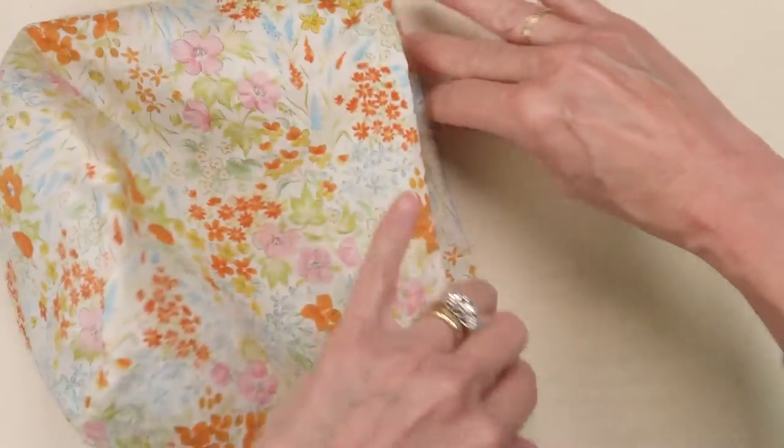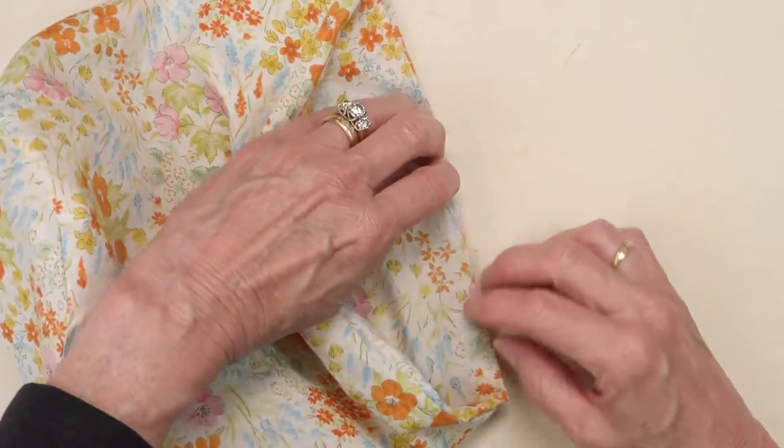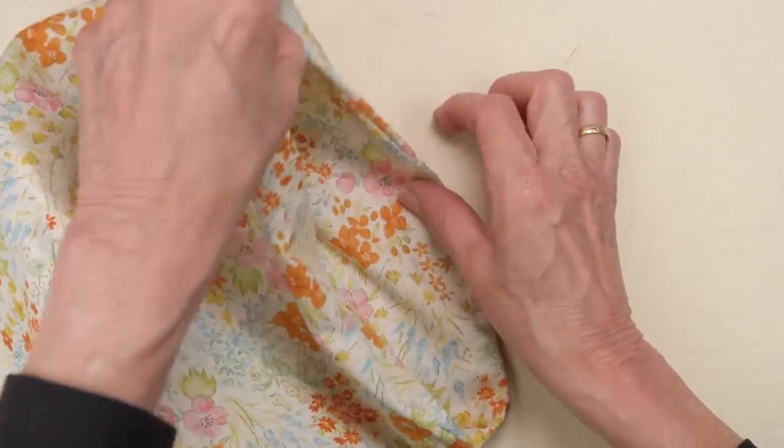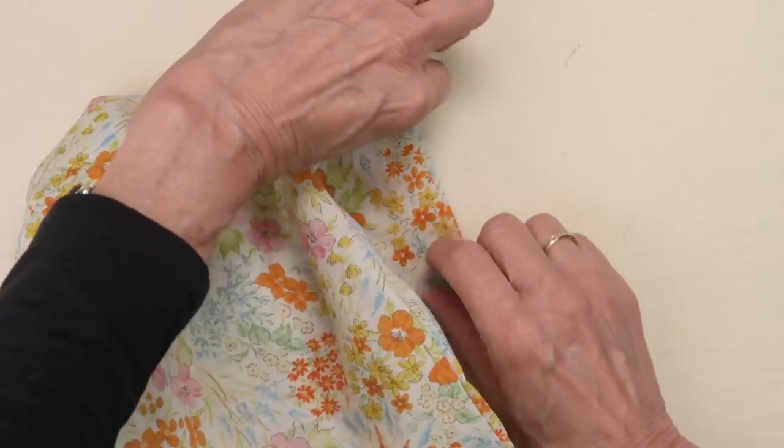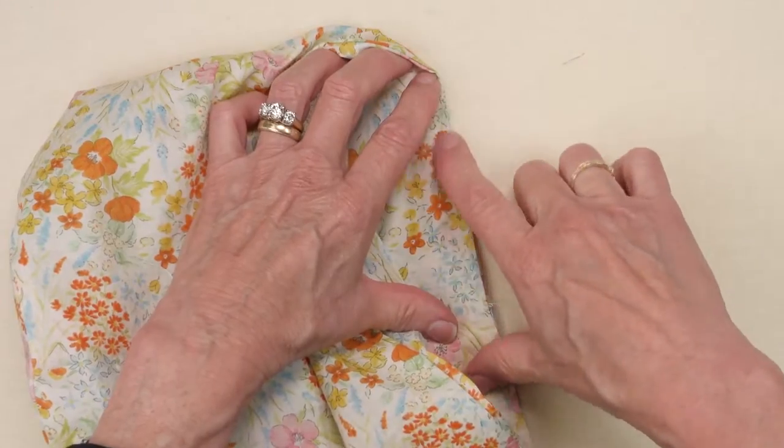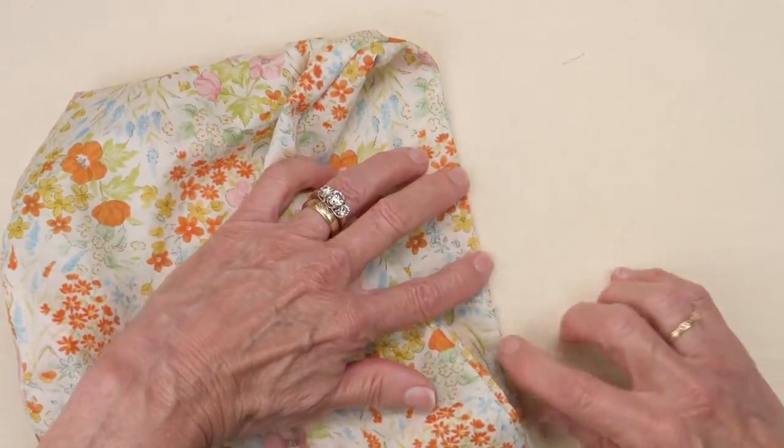And press the top seam so that it's crisp. When you come to the opening, let the quarter inch seam allowance turn in on both sides and press that flat as well. And then press this seam so that it's tidy.